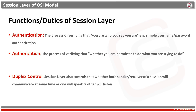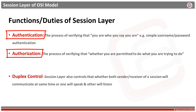The session layer is also responsible for authentication between computers before the exchange happens — for example, simple username and password authentication. It also confirms what a user is authorized to perform. Authorization is the process of verifying that you are permitted to do what you are trying to do. Basically, authentication controls user access and authorization controls what you are permitted to do.